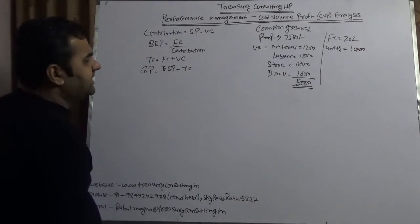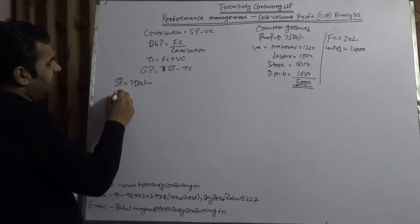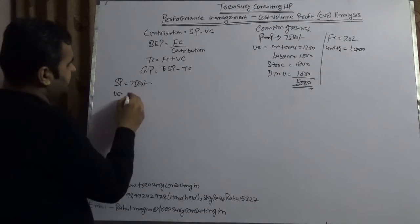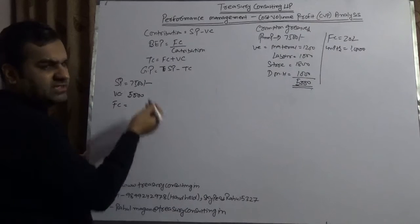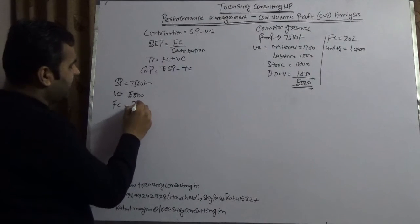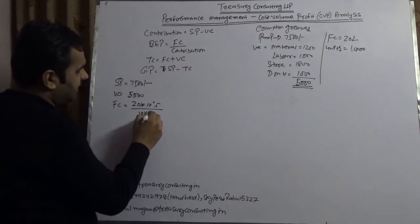In that sense, selling price for Crompton Greaves is $7,500. Variable cost is the total of all this, which is $5,000. Fixed cost will be calculated unit-wise. $20,000 divided by 10,000 is $2 per unit.